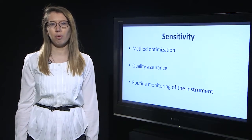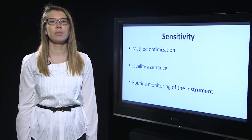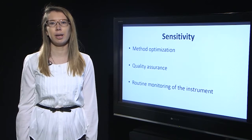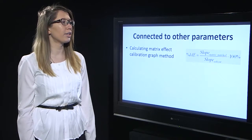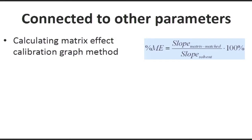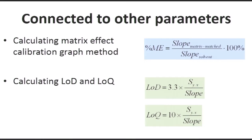It is important because during validation, sensitivity can be used to estimate other validation parameters. For example, ionization suppression caused by co-eluting matrix components results in decreased sensitivity, and therefore we can use sensitivity to calculate matrix effect using the calibration graph method. Or we can use sensitivity when calculating the limit of detection and limit of quantitation.